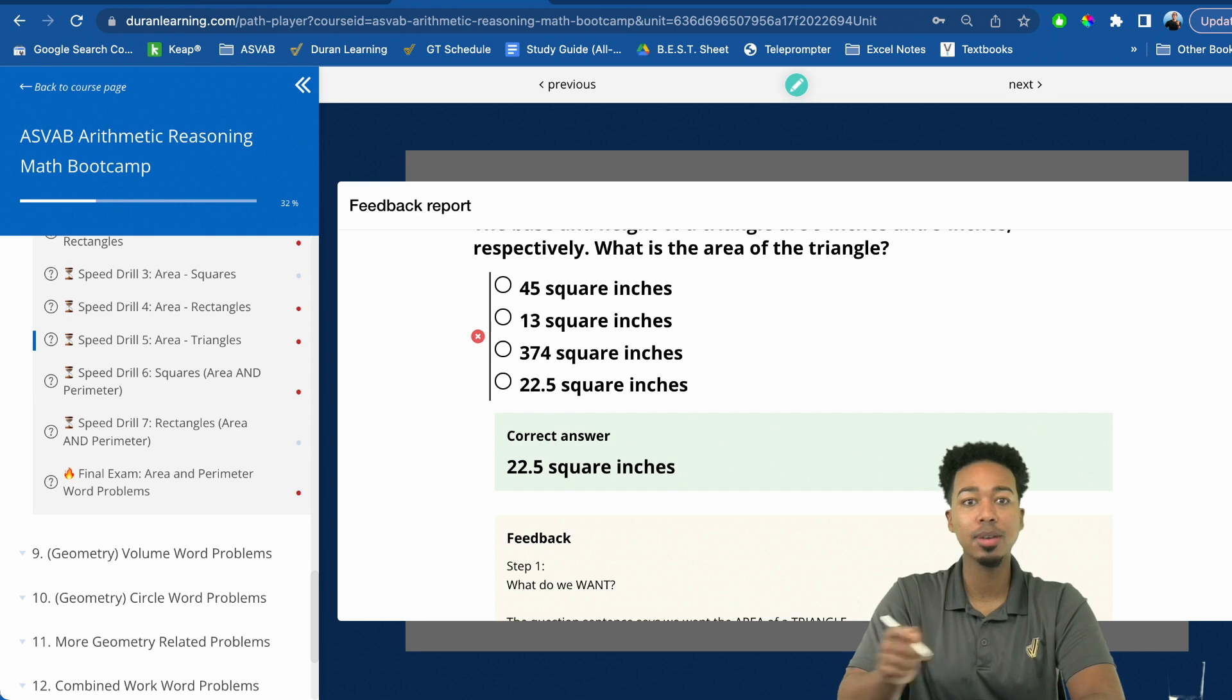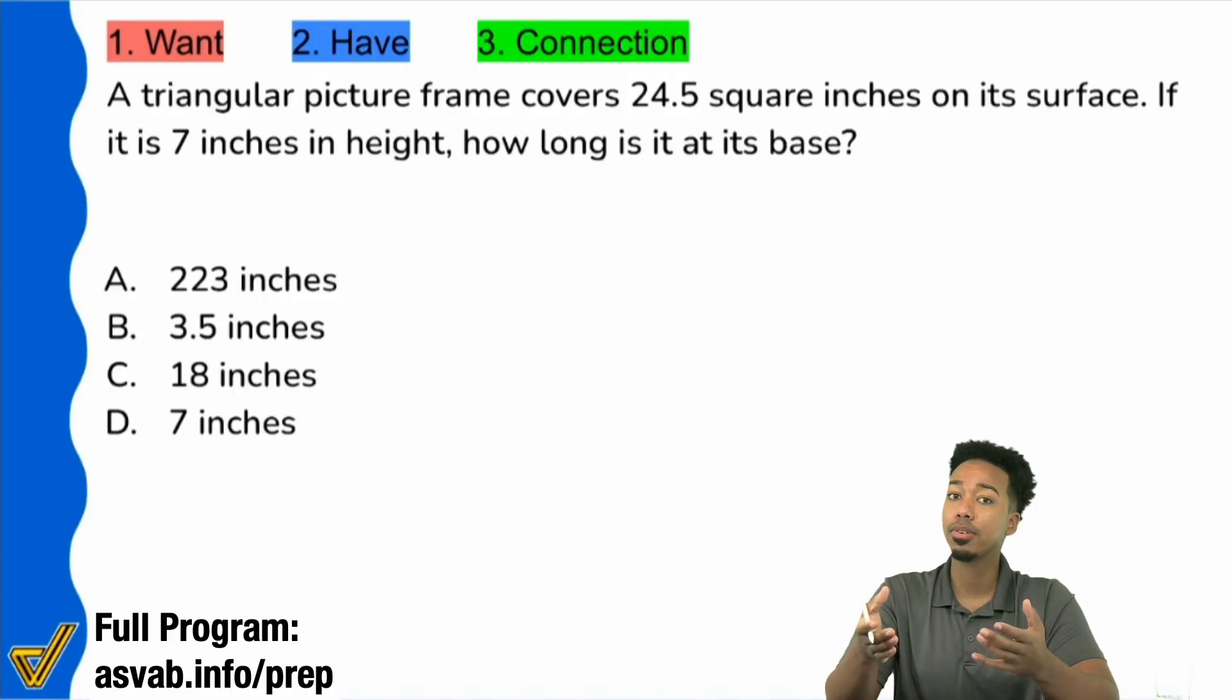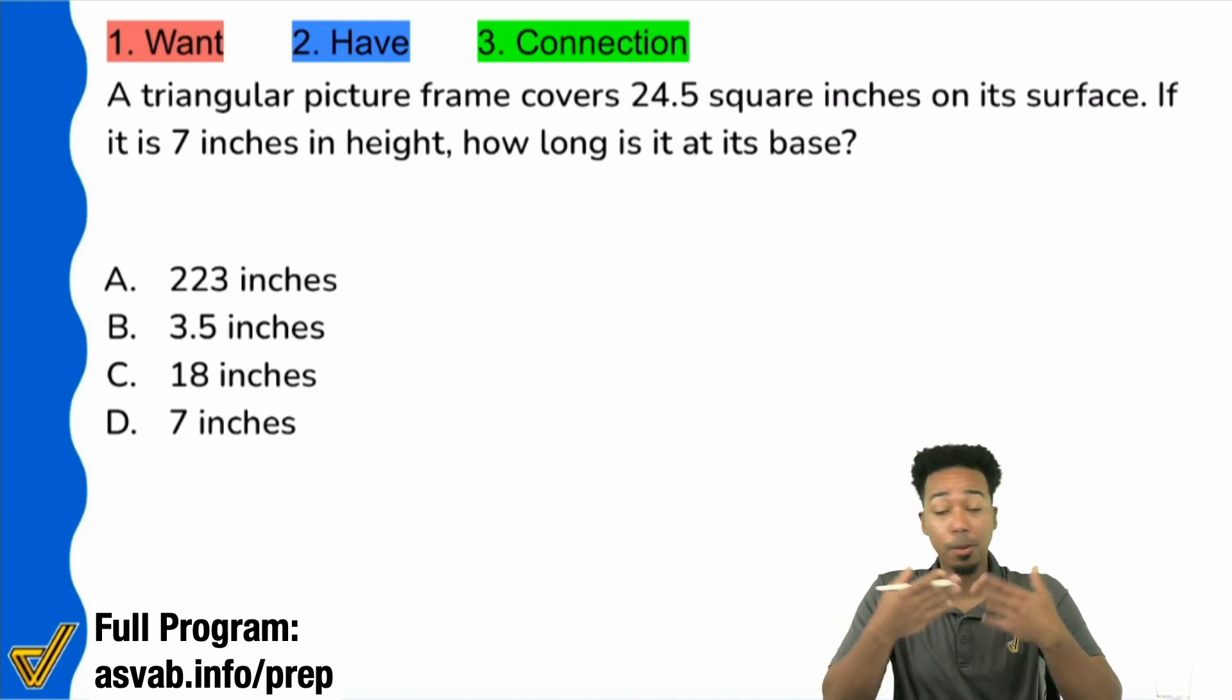So again, if you're in the program, you're going to access your arithmetic reasoning course after this video and you're going to get to work to make sure that you raise your score the right way. And if you don't have the program, well, why not? It's the most affordable program out there. It's helped thousands of students succeed and it's the very minimal investment of your time and money to get that huge bonus and financial stability in your military career. Take control. Go ahead and click the link in the description of this video to learn more.